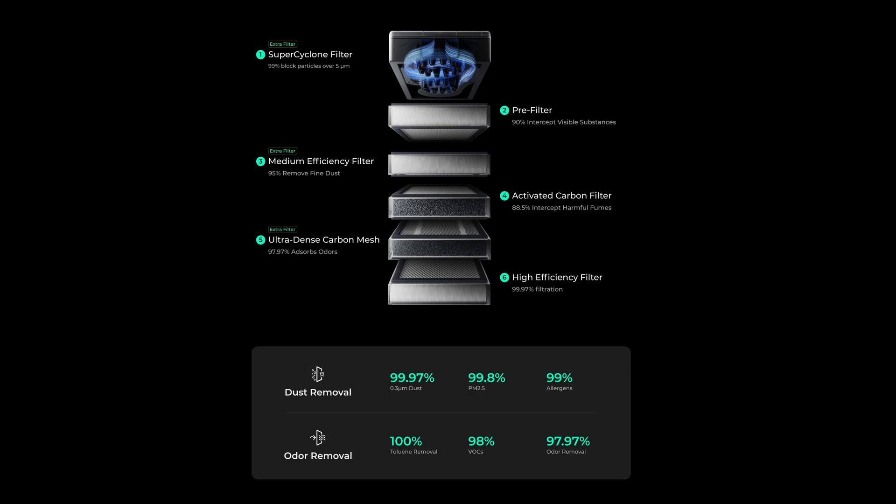This is water washable, so you can keep on reusing it. You then have a pre-filter that will intercept 90% of visible substances, then a medium efficiency filter that will remove 95% of fine dust, the active carbon filter that will intercept 88.5% of harmful fumes, then the ultra-dense carbon mesh which will absorb odors, and the high efficiency filter. That's a lot. And these are actually cheaper than the predecessor. The whole kit is like half the price.